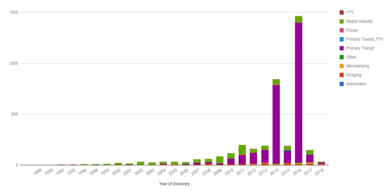No missions were planned to coincide with the transit of Earth visible from Mars on 11 May 1984, and the Viking missions had been terminated a year previously. Consequently, the next opportunity to observe such an alignment will be in 2084.